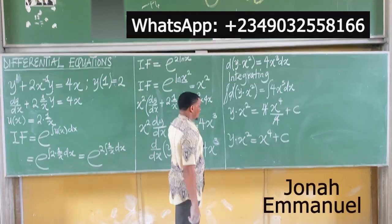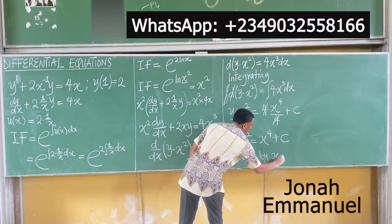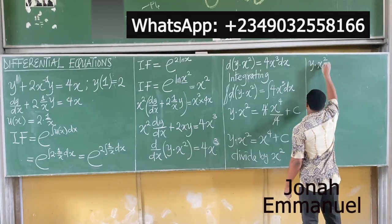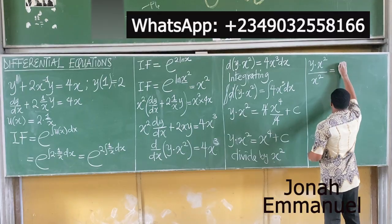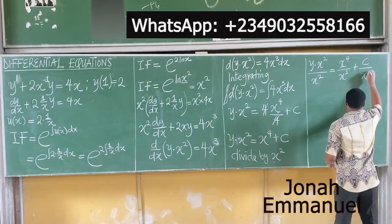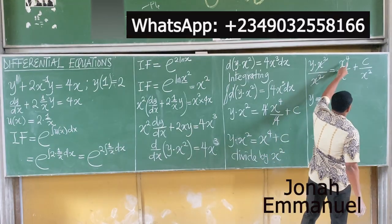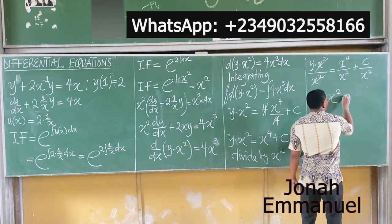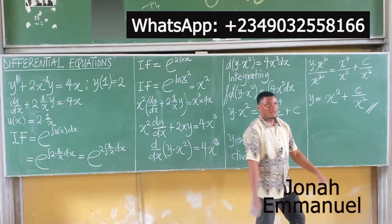We have y·x² = x⁴ + C. To get y, divide both sides by x²: y = x⁴/x² + C/x² = x² + C/x². This is the general solution. But we have an initial condition to apply.